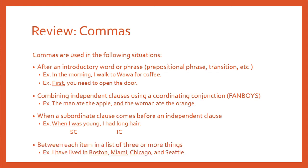The last example, which is probably the easiest, is that you need commas between each item in a list of three or more things. The example: 'I have lived in Boston, Miami, Chicago, and Seattle.' All of those have something in common — they are cities I have lived in. Between each one you need to have a comma, so the reader knows that each of those things is separate and not one big thing.